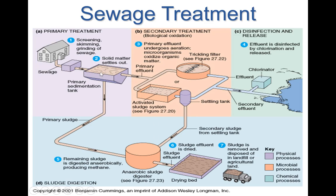The liquid material goes to a primary effluent, where it is further treated using microorganisms under aerobic conditions. These microorganisms are able to digest the liquid material and convert all of that waste into their food source. The solids settle to the bottom and the water remains clean on top, which then moves forward to the next step.